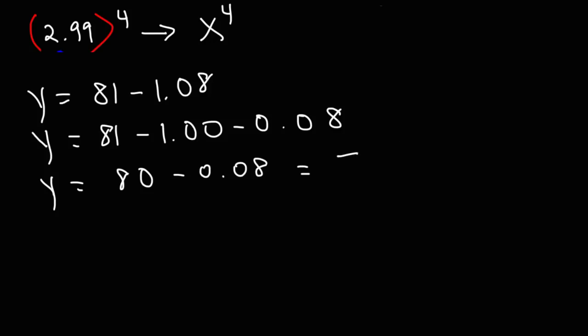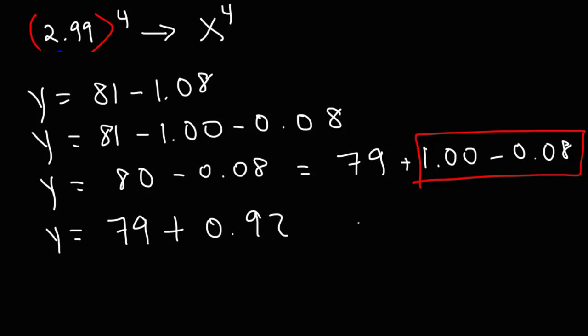Well, we could break this down into 79 plus 1 because 79 plus 1 is 80 and then minus 0.08. So what is 1 minus 0.08? Well, what is 100 minus 8? 100 minus 8 is 92. So 1.00 minus 0.08 must be 0.92. So we have 79 plus 0.92, which is 79.92.